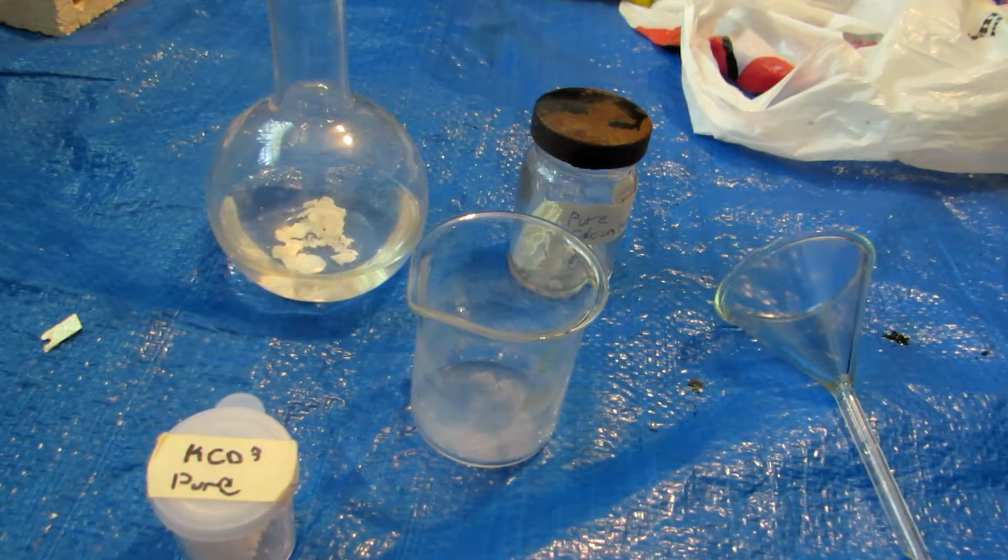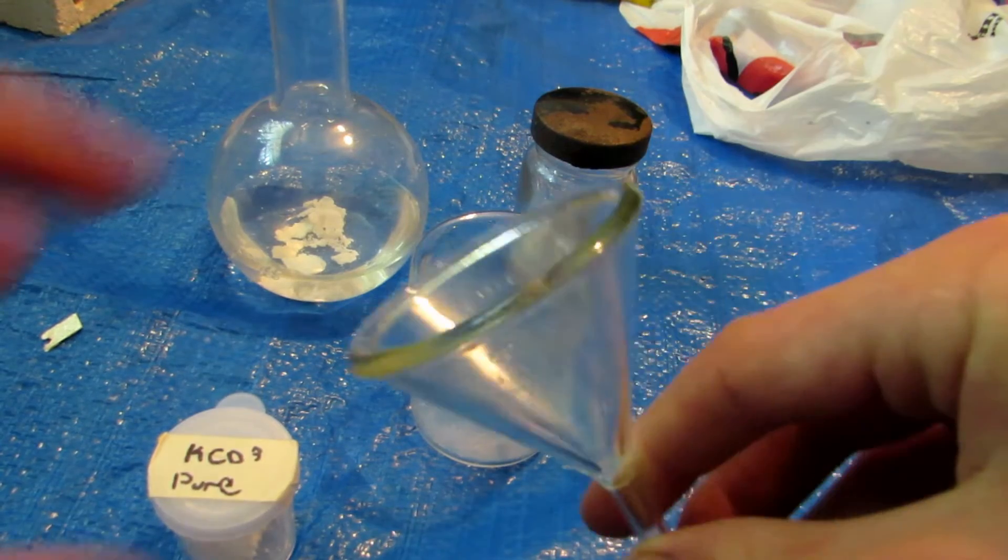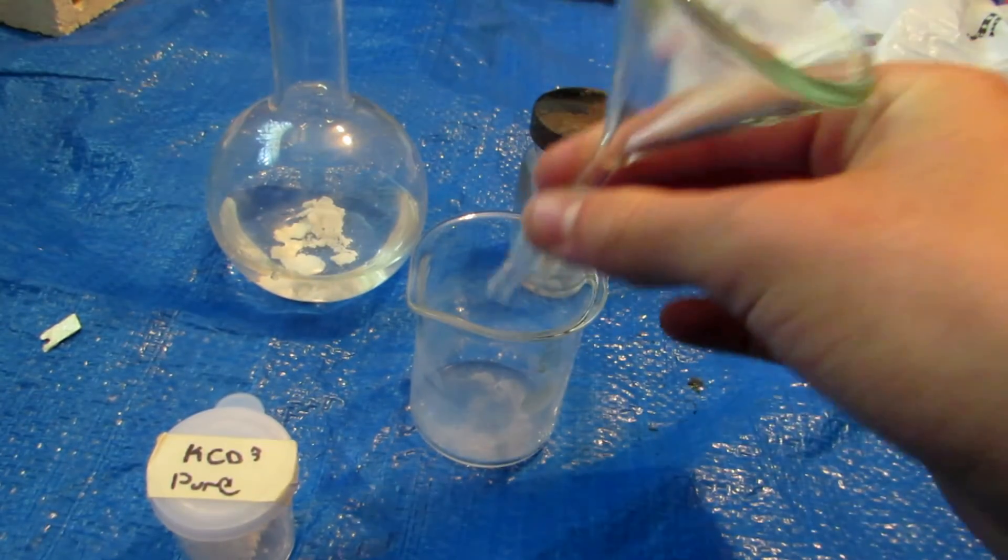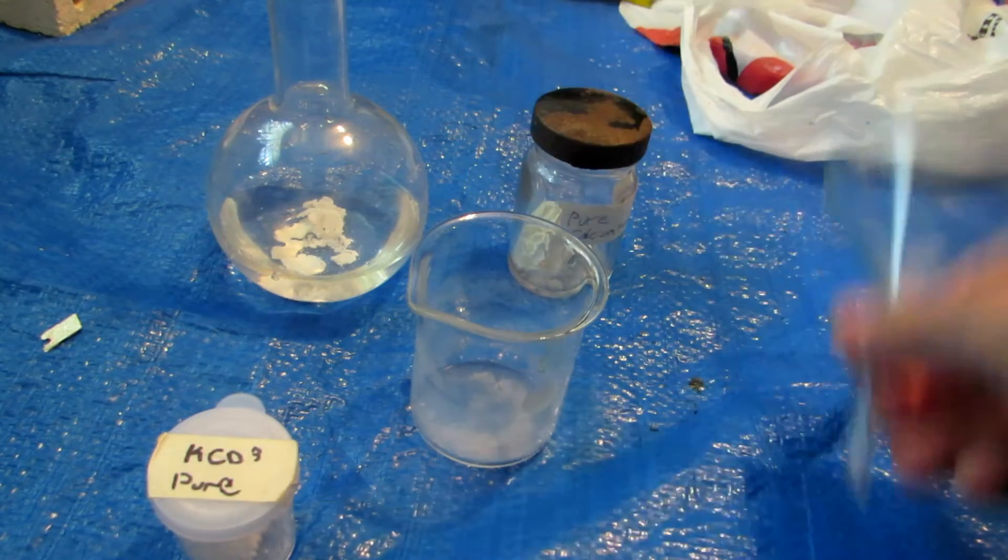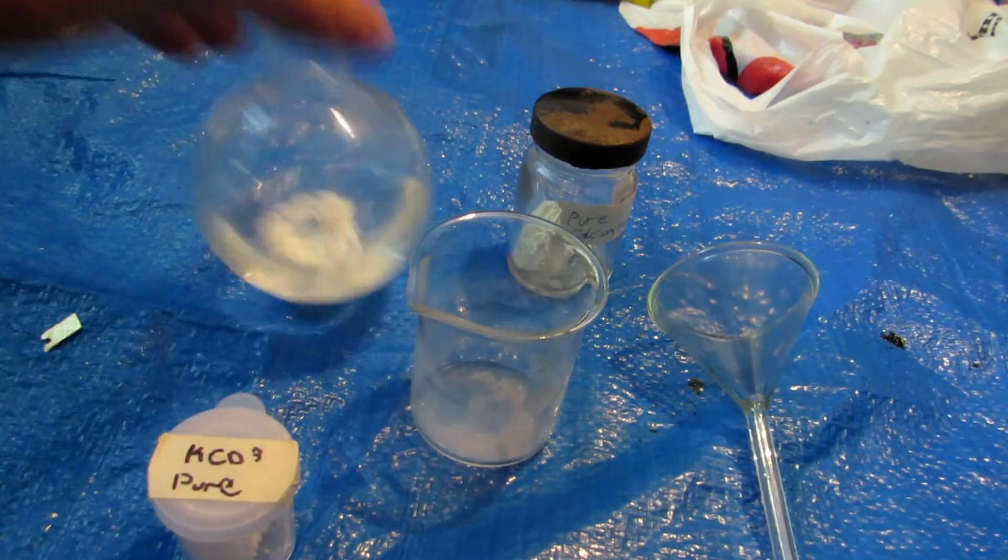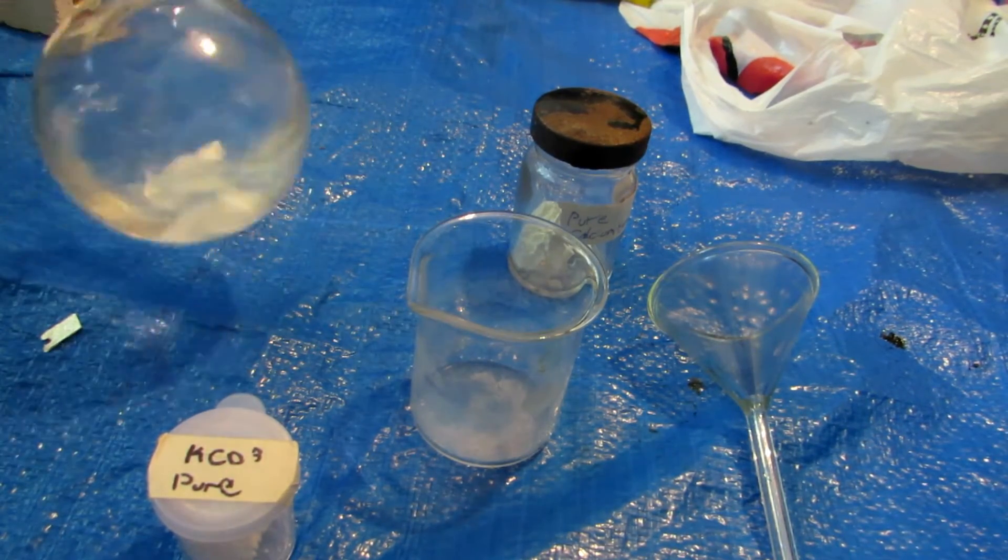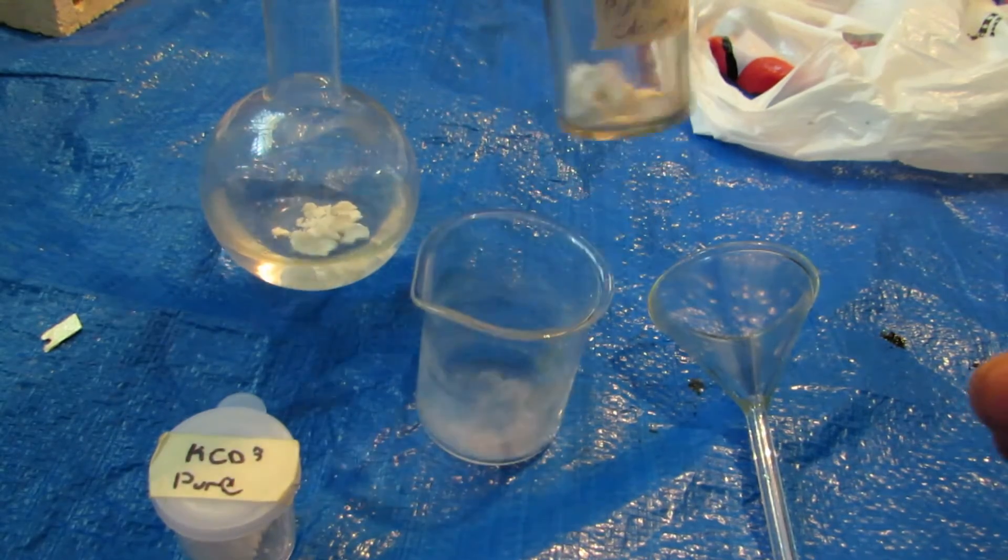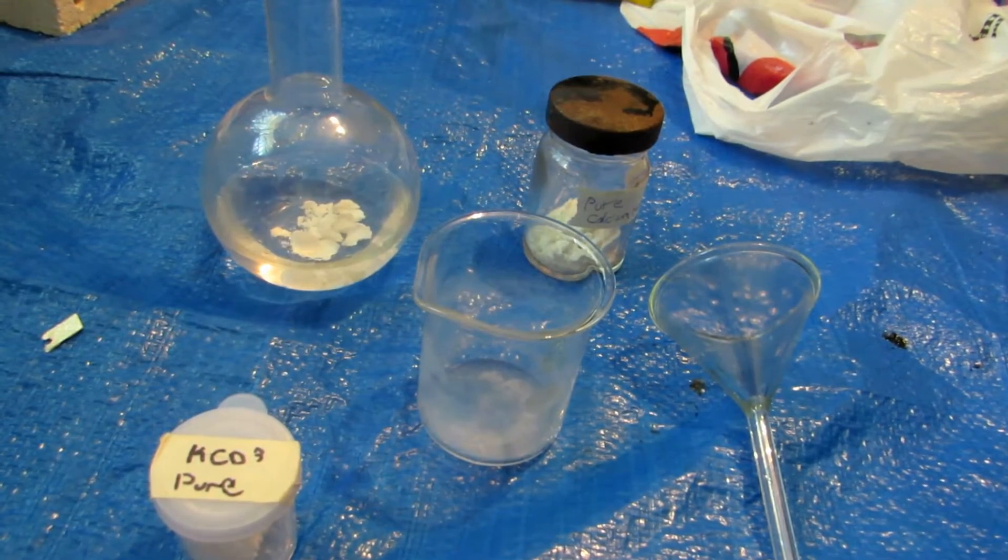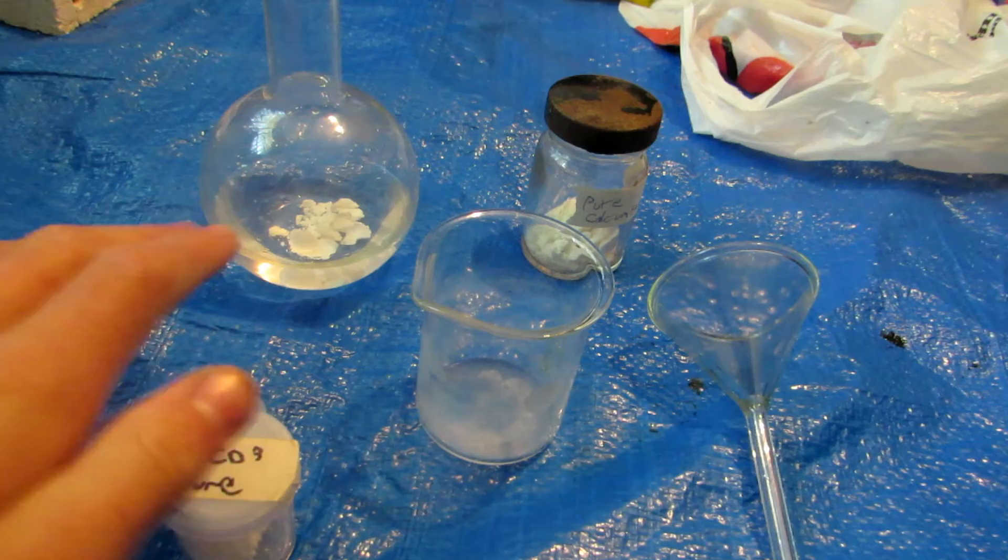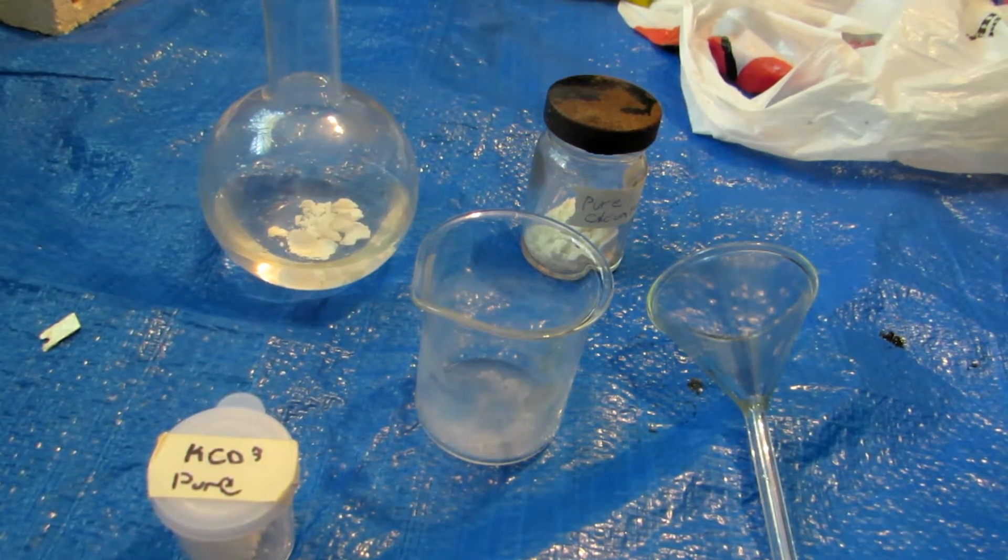Anyhow, so we're just going to swirl this around and make as much dissolve as we possibly can. When as much is dissolved as we possibly can, we'll take a piece of coffee filter, put the coffee filter in here, and filter our solution through the coffee filter into this beaker. The excess calcium hydroxide can then be dried and re-added to our little vial here for future runs. Anyhow, so I'll make sure to swirl this around and create a nice and concentrated solution.